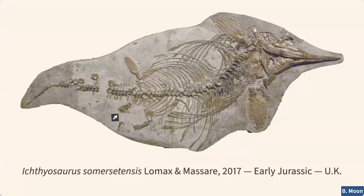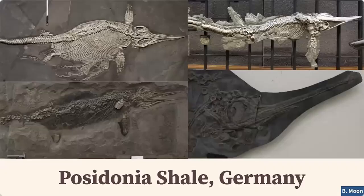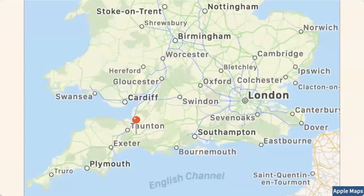Jurassic ichthyosaurs are perhaps some of the most famous — certainly the first found — and are preserved exceptionally well and virtually complete in so many ways. But often they are preserved in a highly flattened state where the ichthyosaur has landed on the seafloor after dying, been covered by rock, and over time been compressed. This is also seen in the Posidonia Shale in Germany, which is from the same time period as the Strawberry Bank locality just outside Ilminster in Somerset.